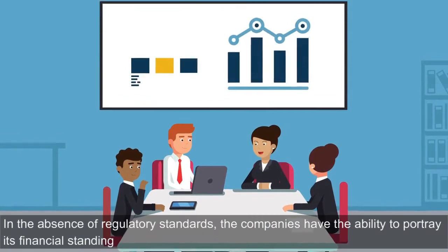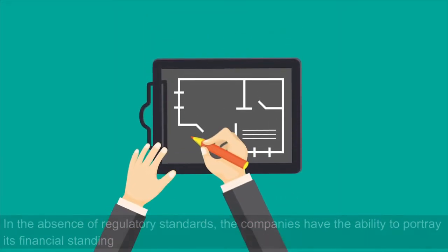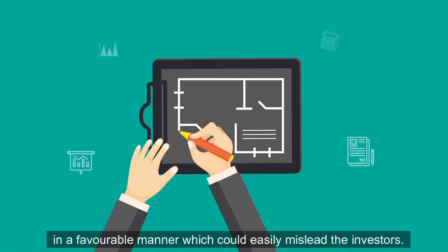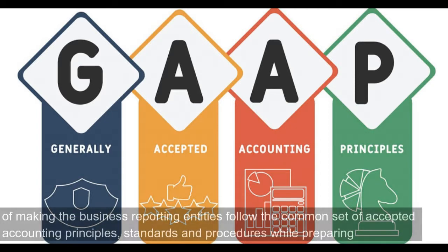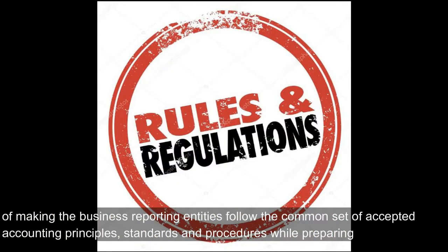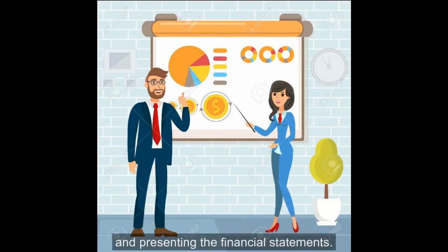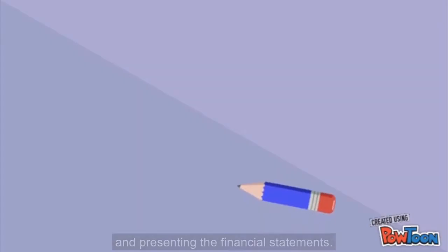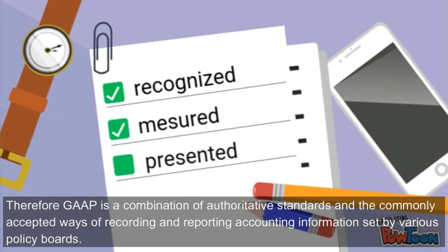In the absence of regulatory standards, the companies have the ability to portray their financial standing in a favorable manner, which could easily mislead the investors. This is where the generally accepted accounting principles play their role of making the business reporting entities follow a common set of accepted accounting principles, standards and procedures while preparing and presenting the financial statements. Therefore, GAAP is a combination of authoritative standards and the commonly accepted ways of recording and reporting accounting information.